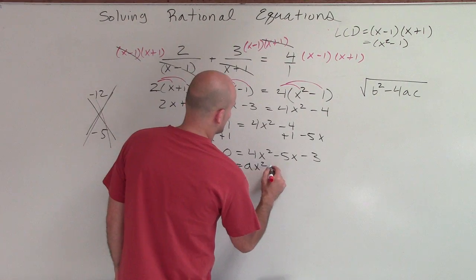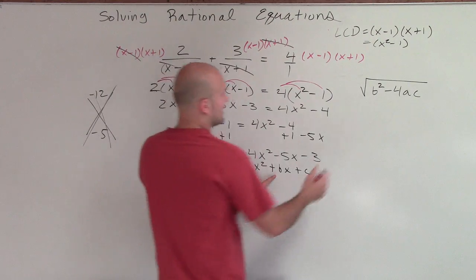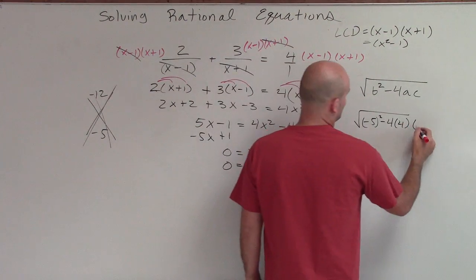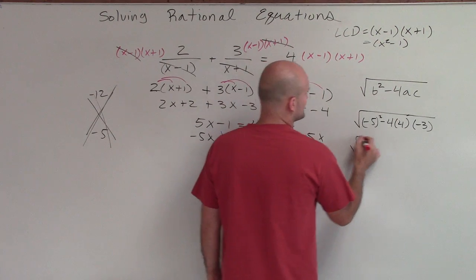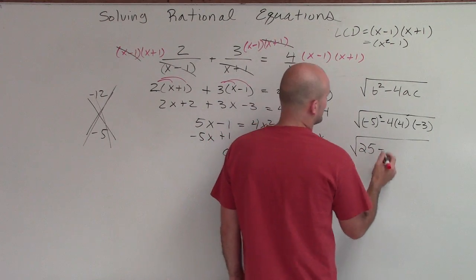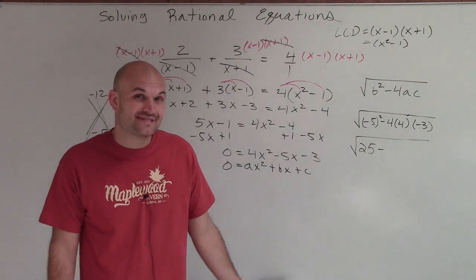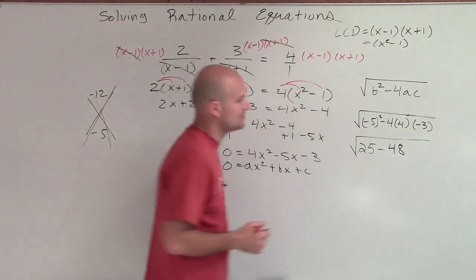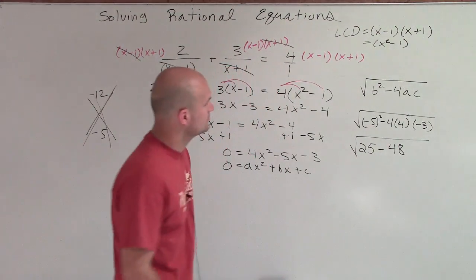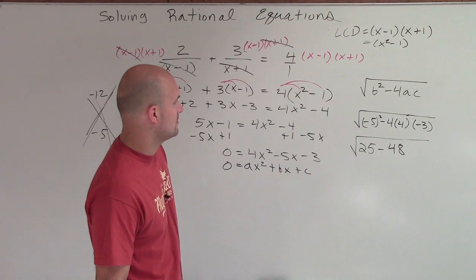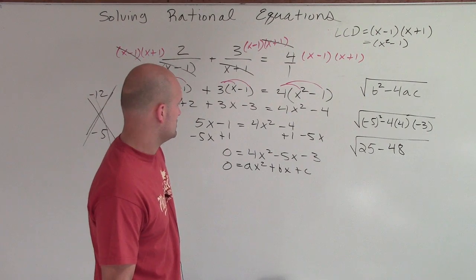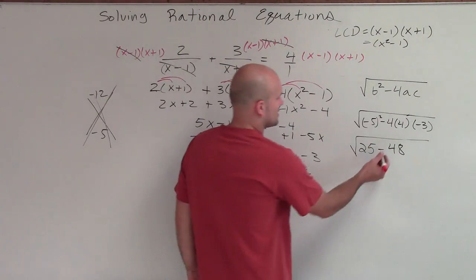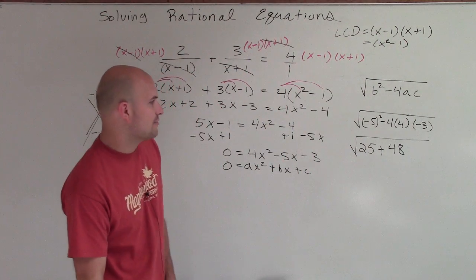Remember, we need the form ax squared plus bx plus c. So our discriminant is b squared minus 4ac: that's negative 5 squared minus 4 times 4 times negative 3. Negative 5 squared is positive 25, and negative 4 times 4 times negative 3 becomes positive 48. So we have 25 plus 48, which equals 73.